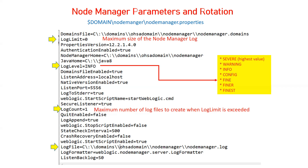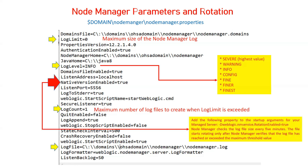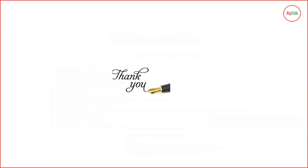Enabling LogLimit and LogCount alone is not sufficient to enable node manager log rotation. You must also add the JVM parameter '-Dweblogic.nmservice.RotationEnabled=true' to your admin server or managed server JVM arguments. Without this parameter, log rotation for node manager will not work even if LogLimit and LogCount are configured. This covers all aspects of log file management — how to maintain, view, and change different parameters for server, domain, and node manager log files.